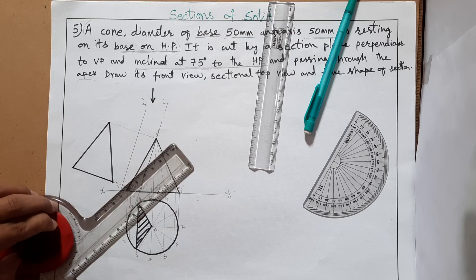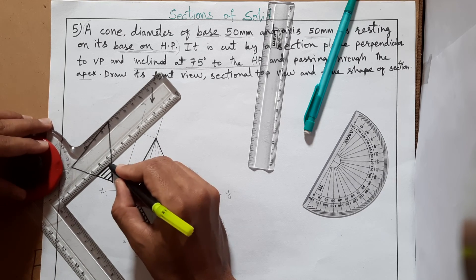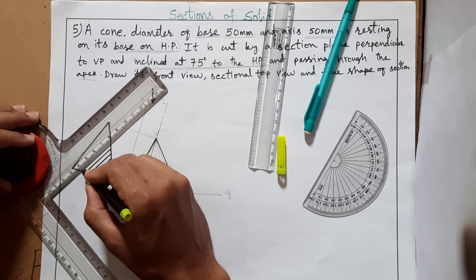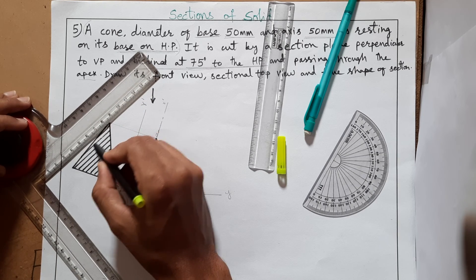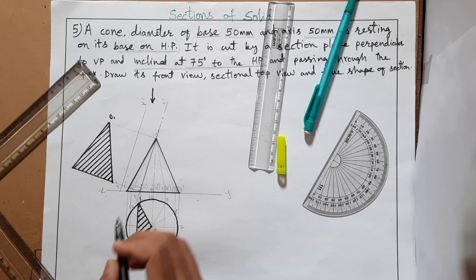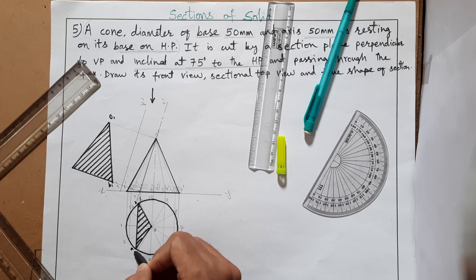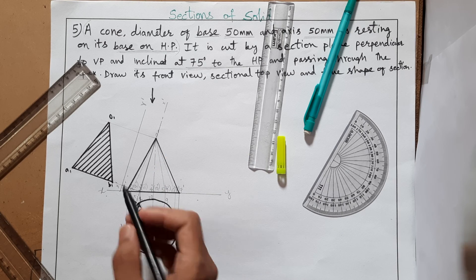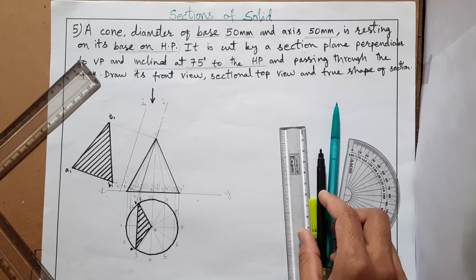Do hatching on the true shape as well, again at 45 degrees, consistent with the previous section hatching. For labeling: in the front view use dash suffix (e.g., 1-dash), in the top view use no dash, in the true shape use suffix-1 (e.g., A1, B1), and for side views use double dashes. This completes the full solution for this sections-of-solids problem.